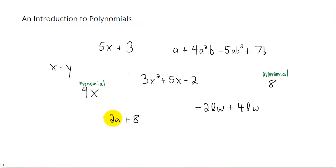I have several examples written here that actually have two terms: 5x plus 3, x minus y, negative 2a plus 8, and negative 2lw plus 4lw all just have two terms. If a polynomial has two terms, it's called a binomial. Bi meaning two, like a bicycle, two wheels.